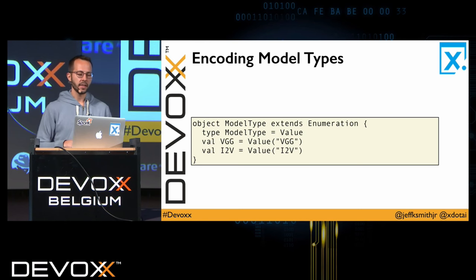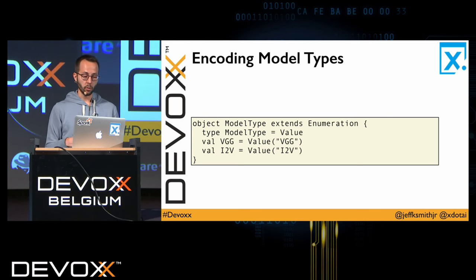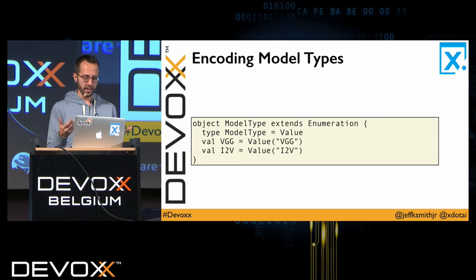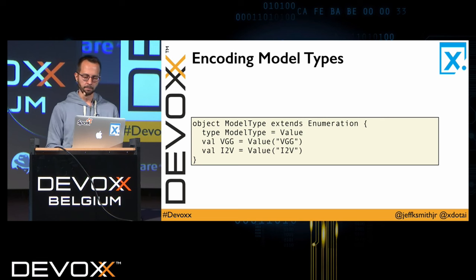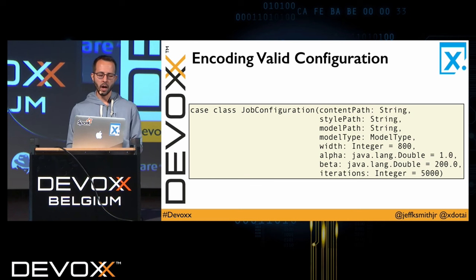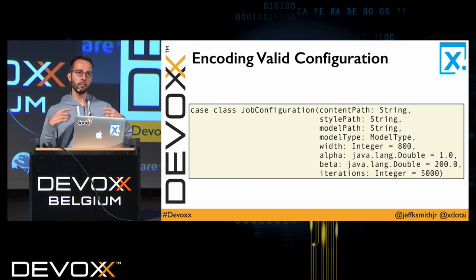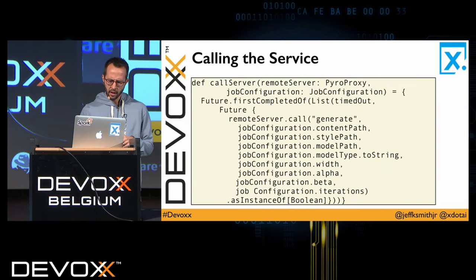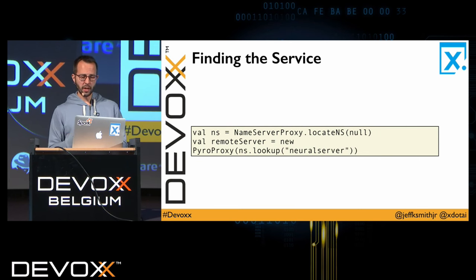Jumping over into Scala land, we're going to build up our implementation using common Scala idioms. We want an enumeration — some sort of static guarantees of well-formed values for our configuration. These are the names of the types of pre-learned deep learning models used here: the VGG and the I2V. Then we build up our job configuration — mirroring closely what we saw in Python, but now within our Scala code, where we want our knowledge of what constitutes a good and well-formed job invocation to exist within our core application.